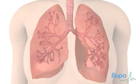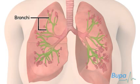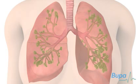People with COPD can have the conditions chronic bronchitis and emphysema. Chronic bronchitis affects the bronchi and emphysema affects the alveoli.